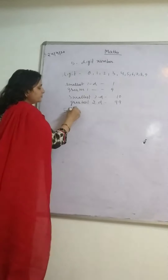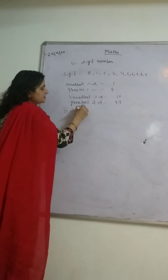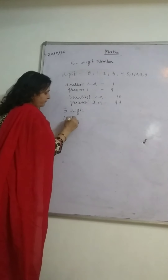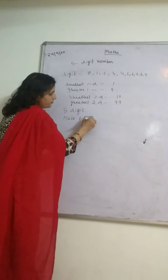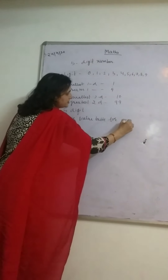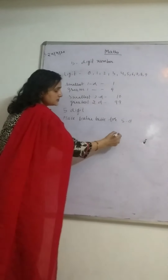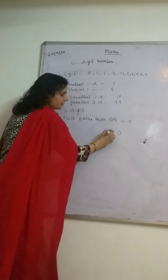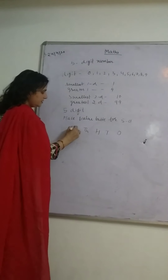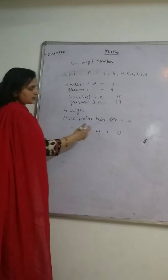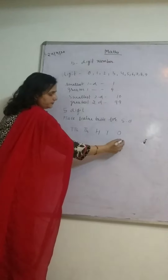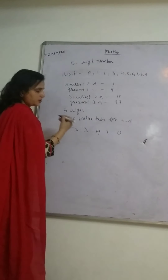Now we are studying about the 5-digit number. The 5-digit number has 5 places. The place value table for a 5-digit number starts with 1, 10, 100, 1000, and 10,000. So these are the 5 places.